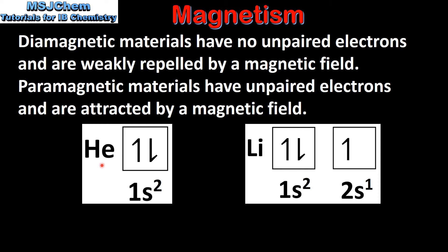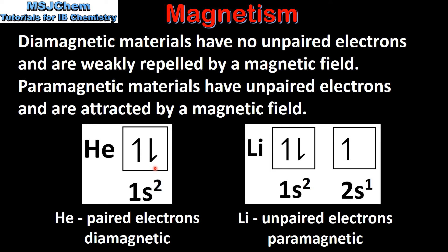Here we have two examples. On the left we have helium, on the right we have lithium. Helium has the electron configuration 1s2, meaning it has two electrons in the 1s sublevel. Lithium has the electron configuration 1s2, 2s1 — two electrons in the 1s sublevel and one electron in the 2s sublevel. By looking at these electron in box diagrams we can see that helium has paired electrons, therefore it's diamagnetic. Lithium has an unpaired electron, therefore it's paramagnetic.